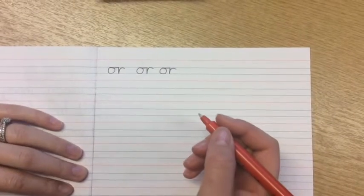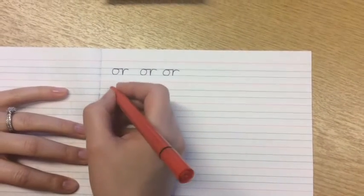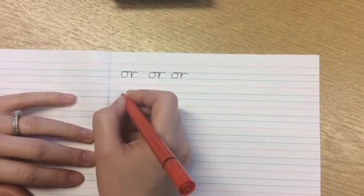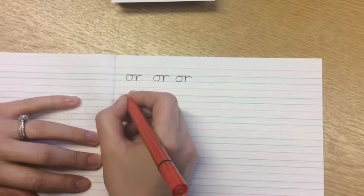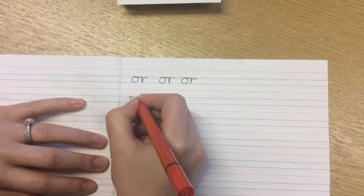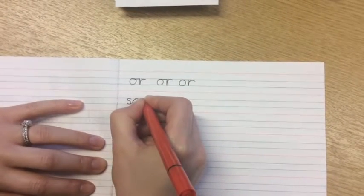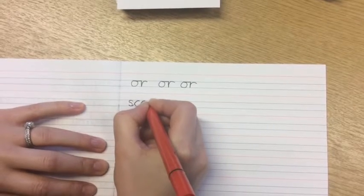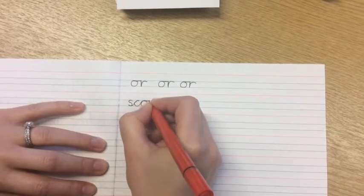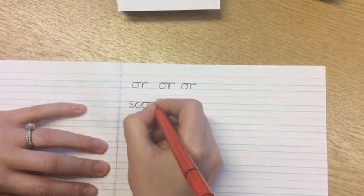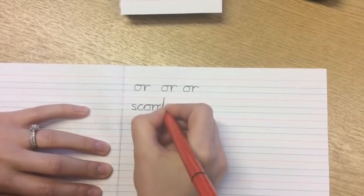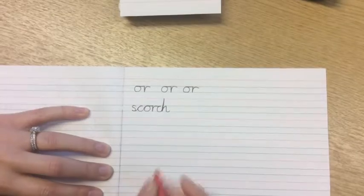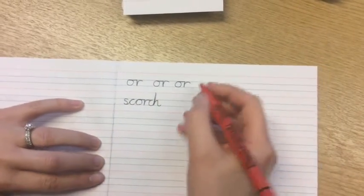We're going to write the word 'scorch' now. A fire might scorch something, or burn it. So we're going to start S, up to the top of the C, round, up to the top of the O and across to the R, down, back up, curve, for the sound at the end, making sure the ascender touches the top red line.